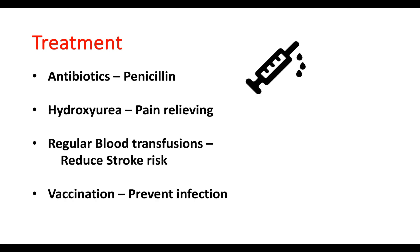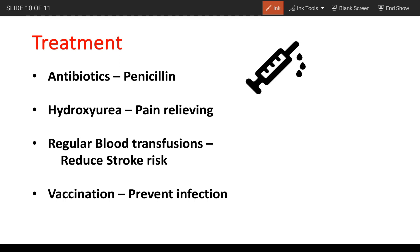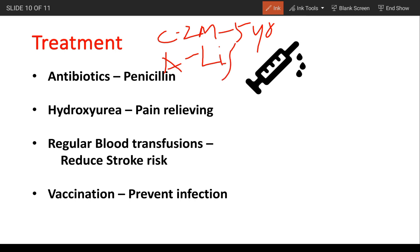Treatment. Children with sickle cell anemia may begin taking the antibiotic penicillin when they are about 2 months old and continue taking it until they are at least 5 years old, which helps prevent infections such as pneumonia. As an adult, if you have had your spleen removed or had pneumonia, you might need to take penicillin throughout your life.